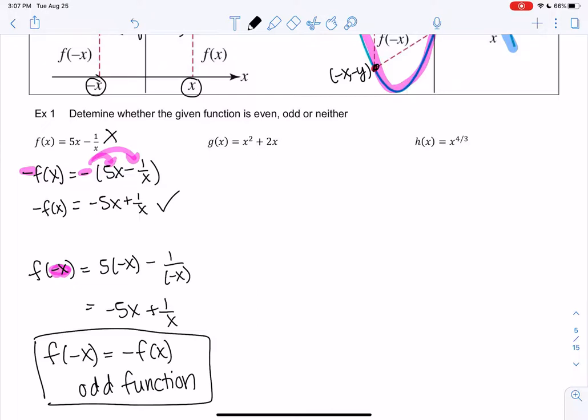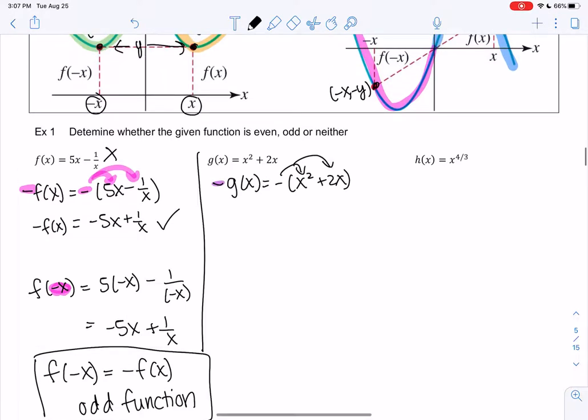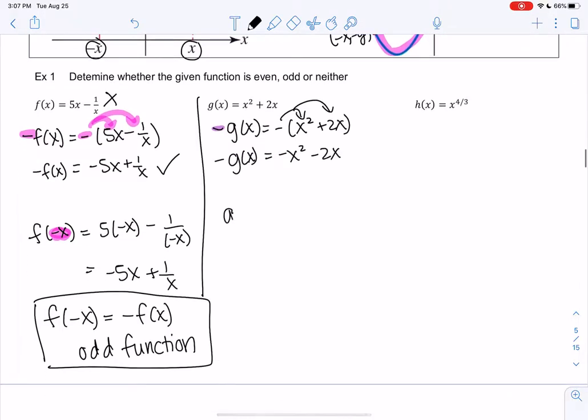Let's try another one. So let's check out what happens to the negative function and then we'll plug in negative x. So negative just means distribute a negative to everything. So we would end up with negative x squared minus 2x. And then we'll plug in negative x.